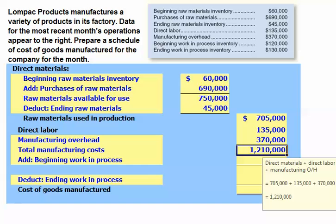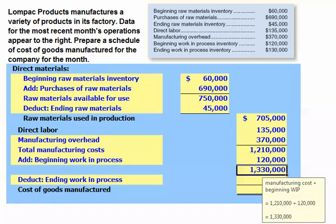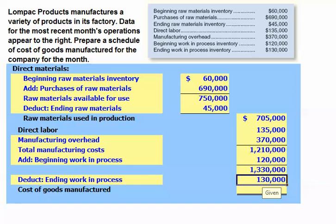In addition to our manufacturing costs incurred for the period, we had beginning work in process inventory of $120,000, meaning our production floor had costs totaling $1,330,000. These costs are allocated either to ending work in process inventory or transferred out to finished goods as cost of goods manufactured. With ending work in process inventory of $130,000, the cost of goods manufactured — the cost of completed goods — is $1,200,000.